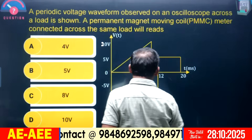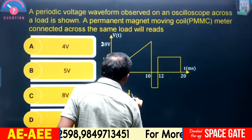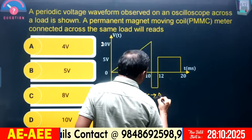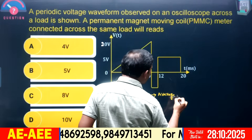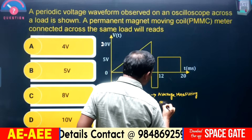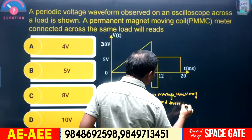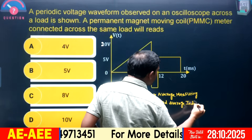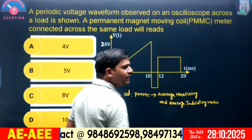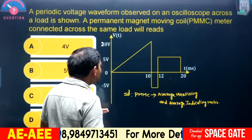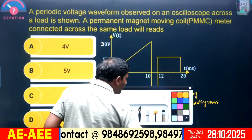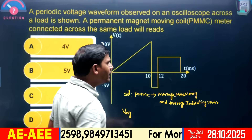The solution is very simple. PMMC is an average measuring and average indicating meter — it measures the average value and indicates the average value. So find the average of this waveform. There are many methods to find the average value; you find the area under the curve, which gives the average value.